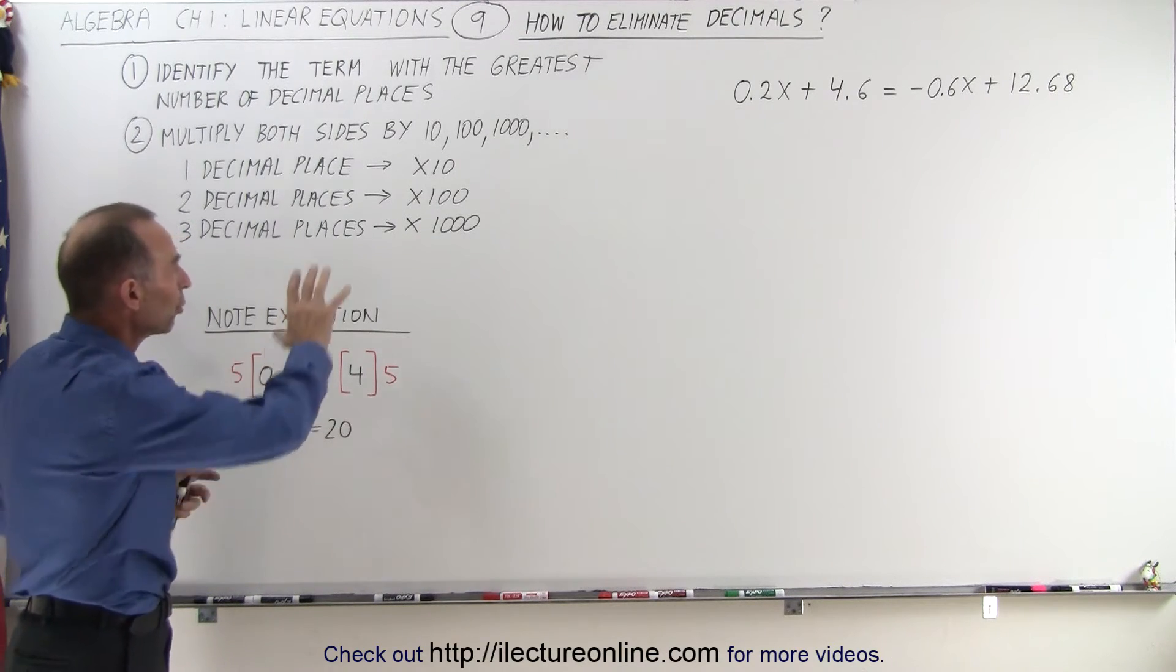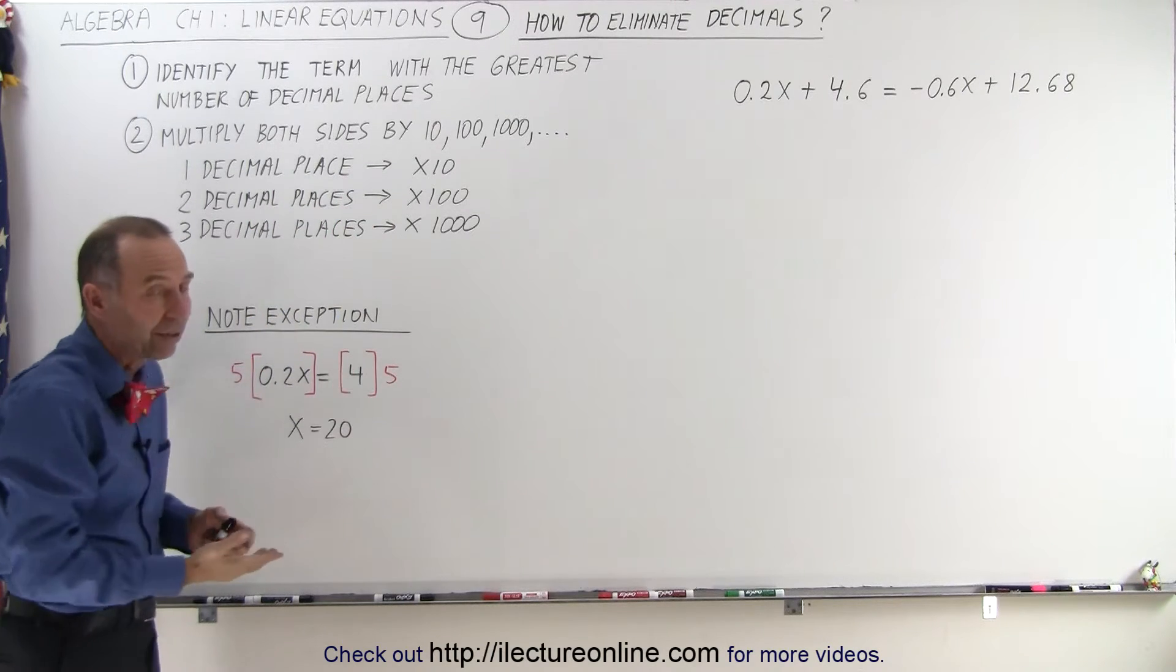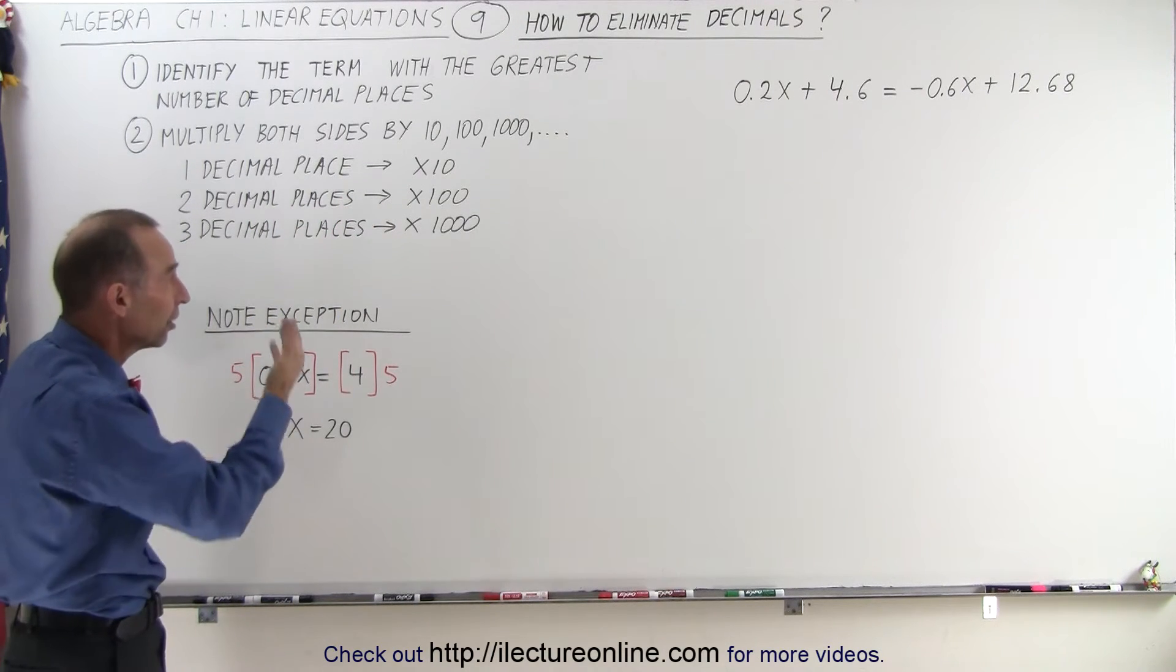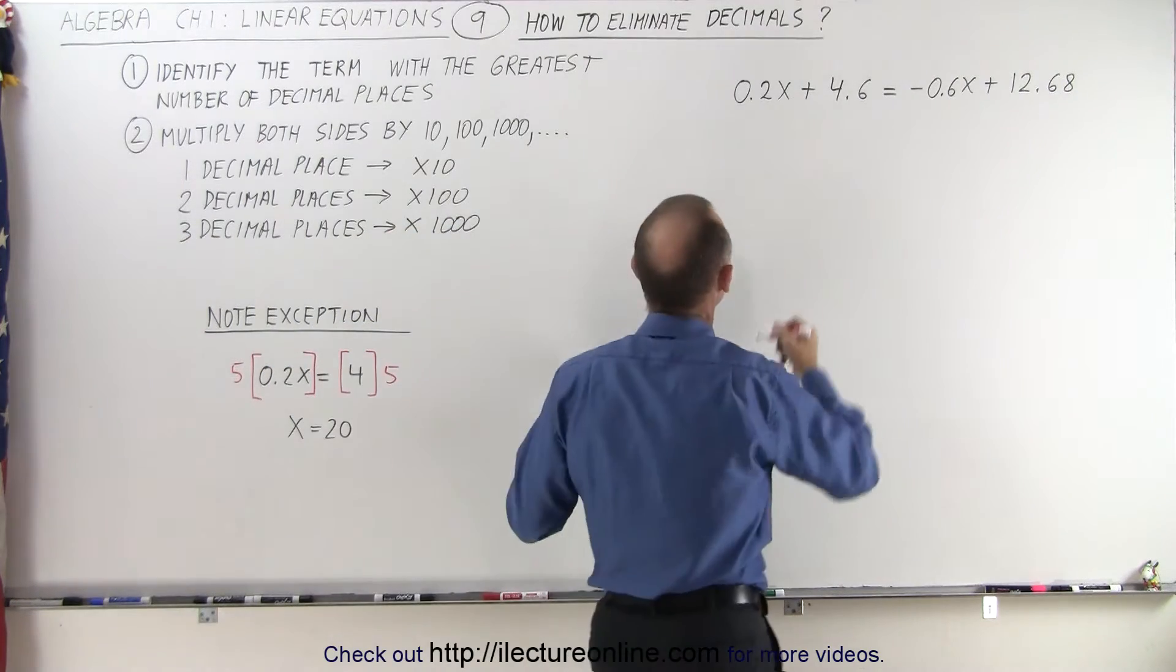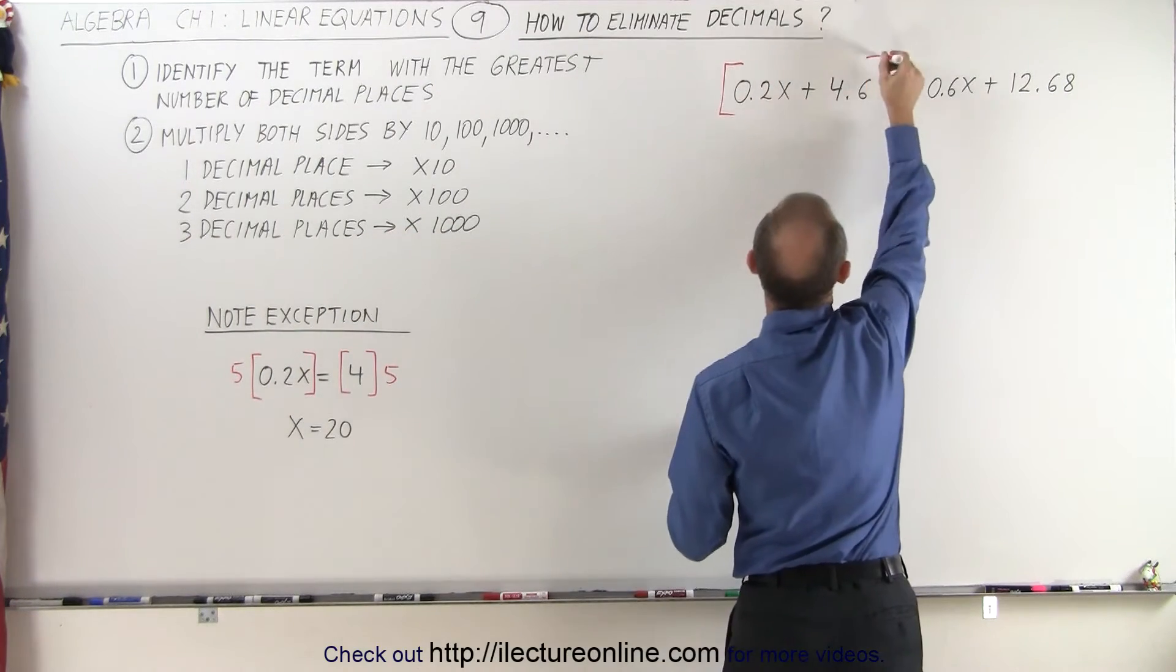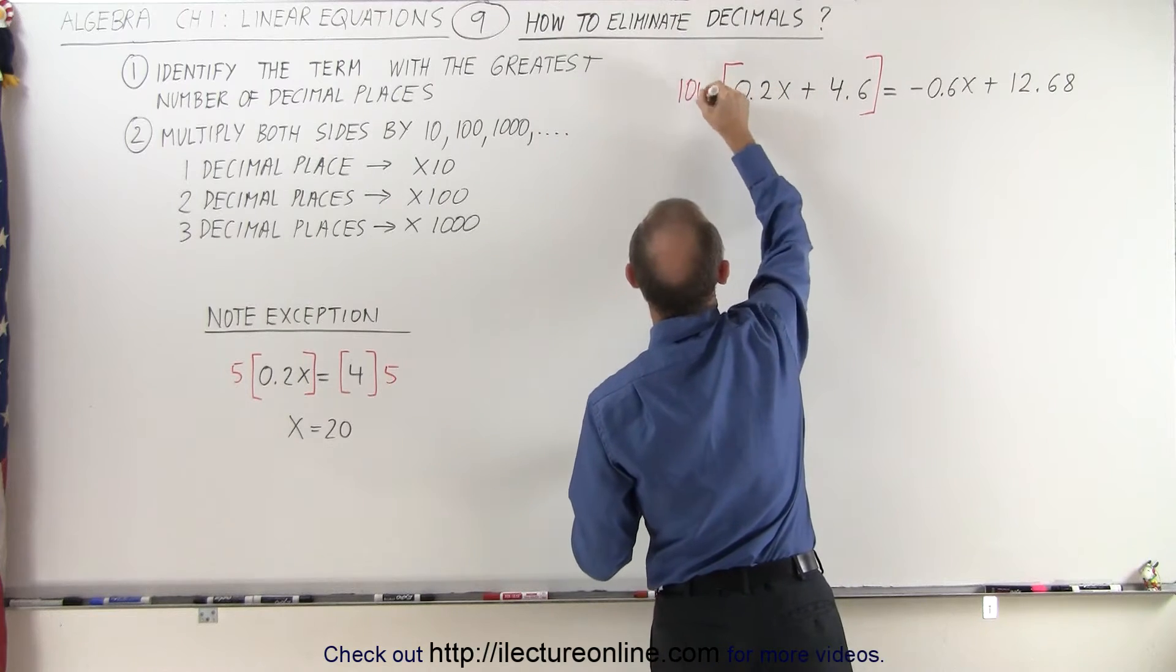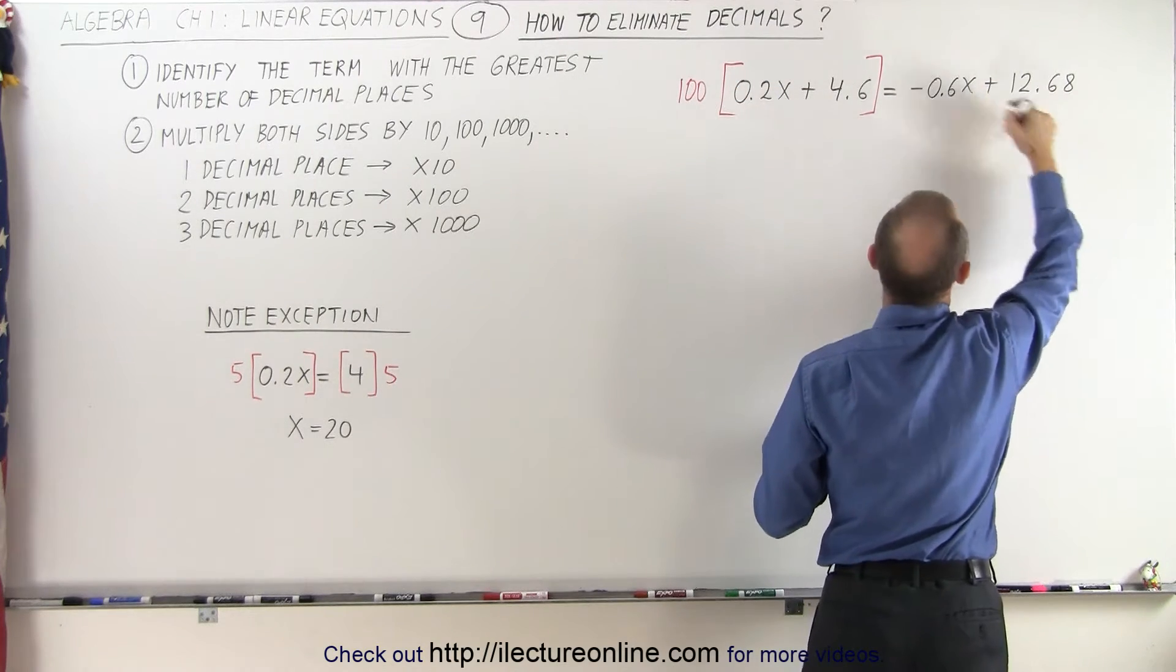But again, the general rule here typically applies, and even if you use that in all cases, it will indeed work. So what we're going to do here is multiply both sides of the equation by 100, because the largest number of decimal places we have here is 2.